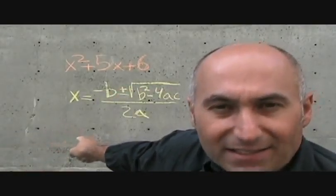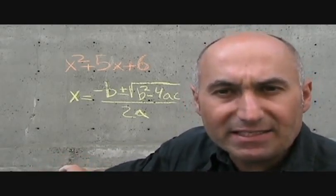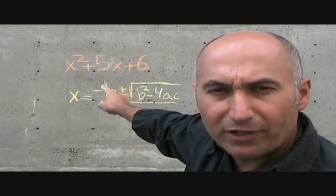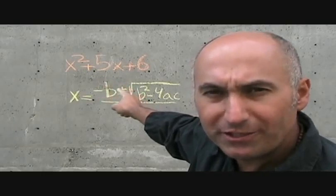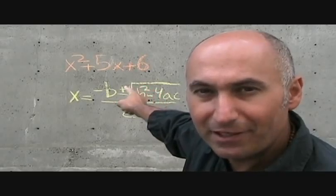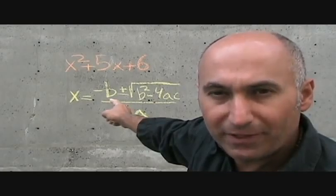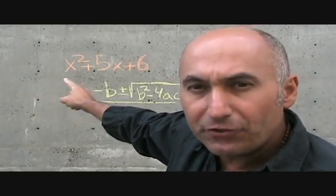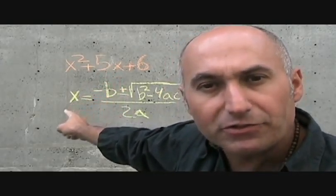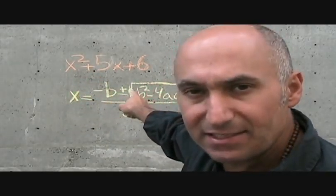Our quadratic formula is: x equals negative b plus or minus the square root of b squared minus 4ac, all over 2a. The values a, b, and c come from the quadratic expression. We'll set it equal to zero. If there's no number in front of x squared, that means there's a 1 there. So a equals 1, b equals 5, and c equals 6.